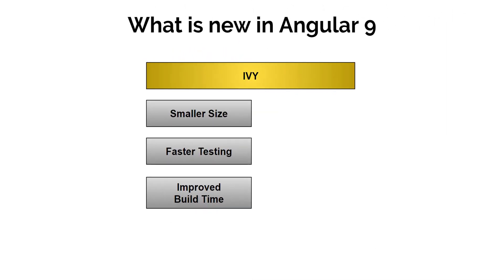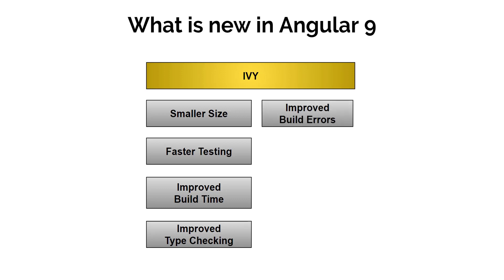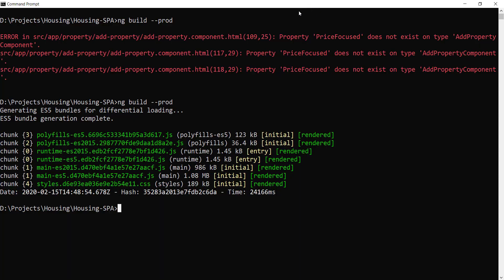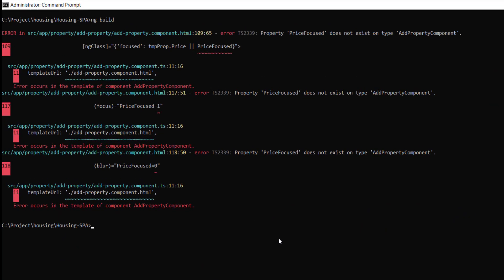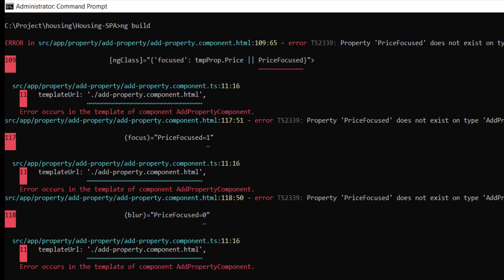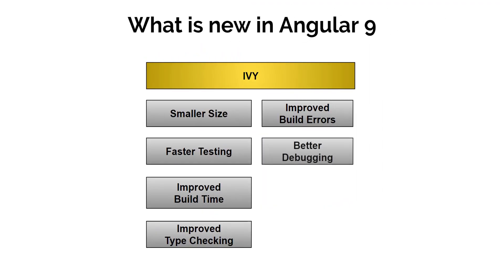The new Ivy compiler is not only faster — it also offers stronger type safety and makes all error messages easier to read. In version 8 or View Engine, a typical compiler error would look one way, and in version 9 with Ivy the same error looks more structured and contains more information. Another improvement is better debugging.